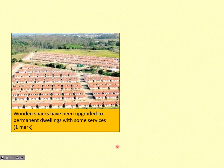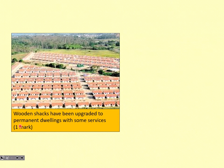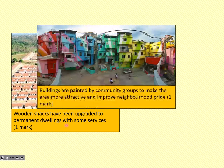Here are some ways that the favelas of Rio de Janeiro have been improved. Some of the buildings have been restored and upgraded into more permanent-looking settlements, sometimes with electricity and running water. Communities also come together to paint their neighbourhoods. These pictures are quite famous — it's an attempt to bring community spirit together, make the favela a more pleasant environment to live in, and increase its tourist appeal.